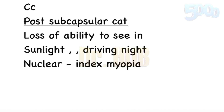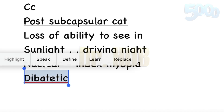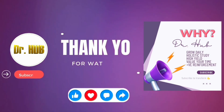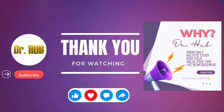Next is the diabetic cataract, which is very important. Diabetic cataract is associated with fluctuating blood sugar levels, which leads to fluctuation in refractive errors. Please do subscribe to learn and grow daily.